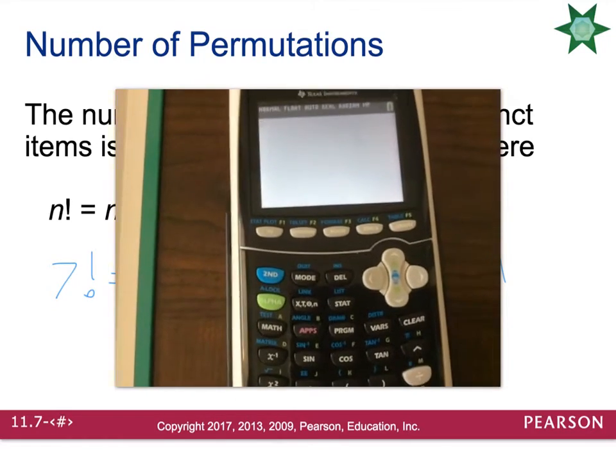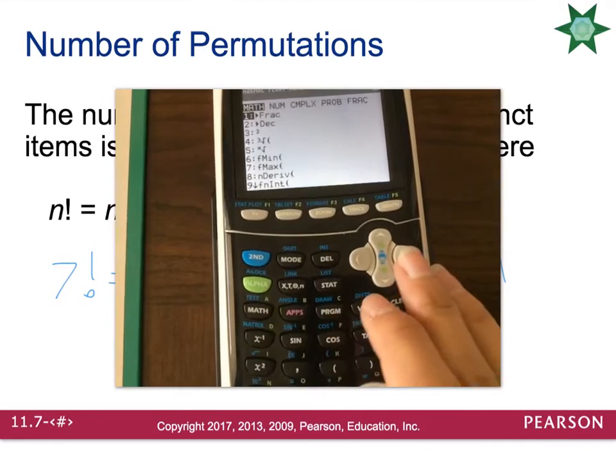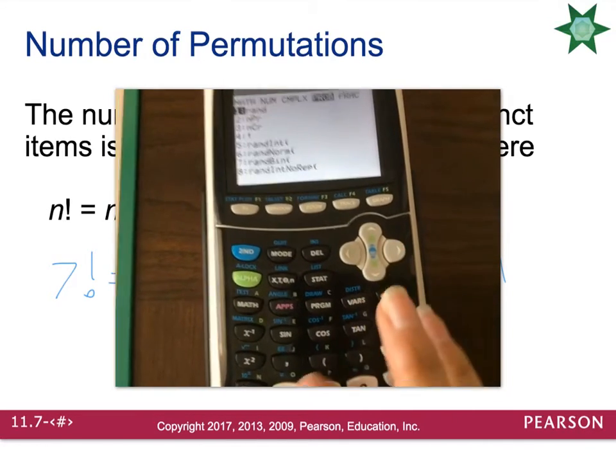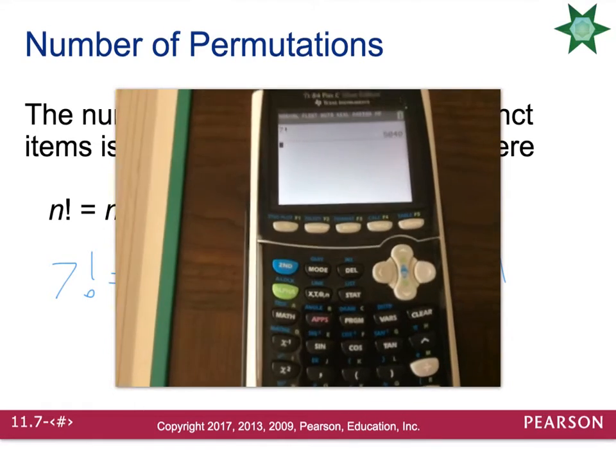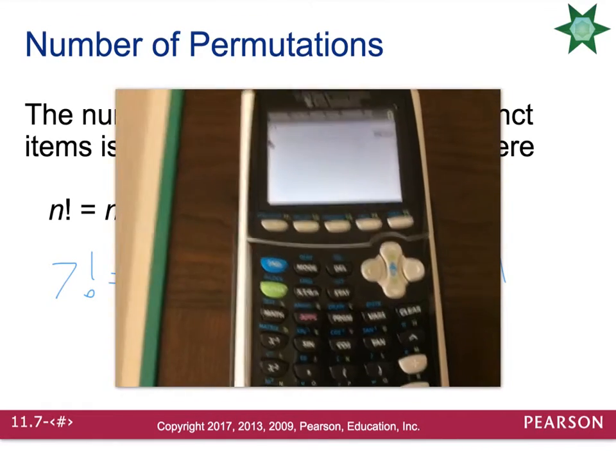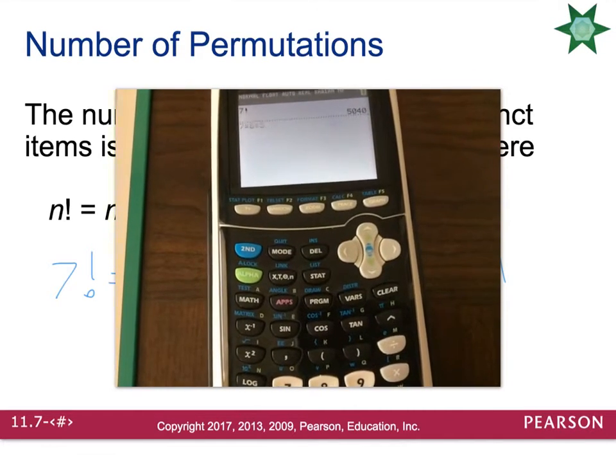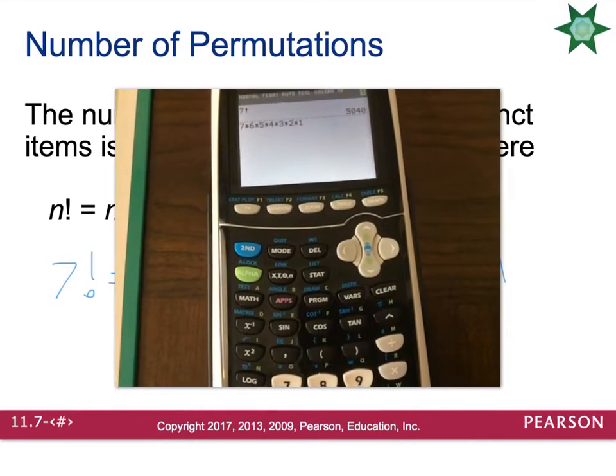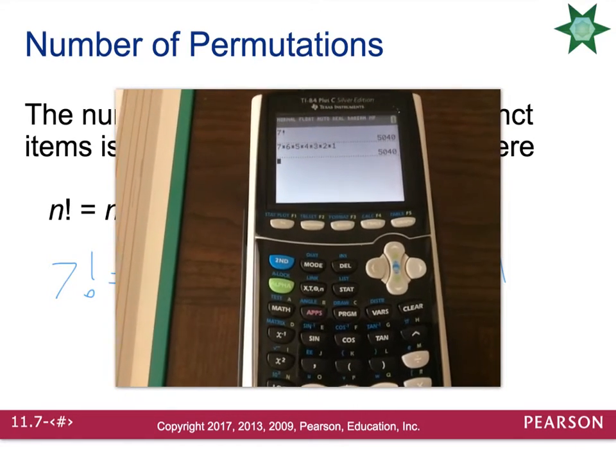So I need to first type in my seven. Then I can go math, probability, factorial. And if I hit enter, it'll multiply it for me: 5,040. Now you can do it by hand if you want. Seven times six times five times four times three times two times one, and you get the same answer. But I think using the factorial button is better.